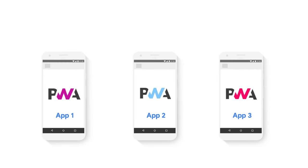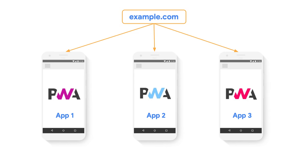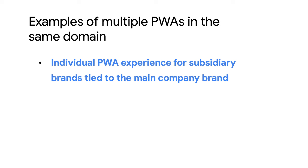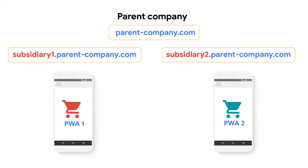In some cases, you might want to build independent PWAs, but still identify them as belonging to the same organization or brand. Sharing the same domain name is a good way of establishing that relationship. The first example is building an individual PWA experience for subsidiary brands tied to the main company brand — for example, a company that has an e-commerce site at parentcompany.com that wants to let its subsidiary brands have their own PWAs, while making sure users understand that they belong to the parent's brand.